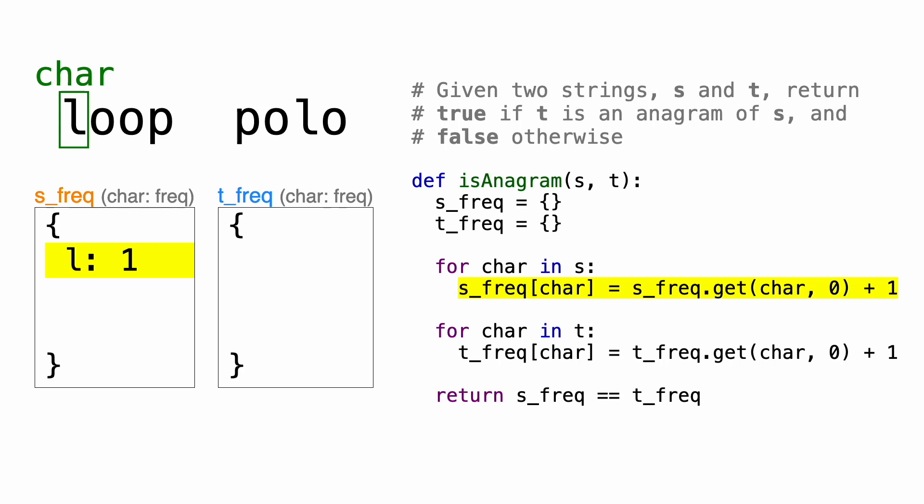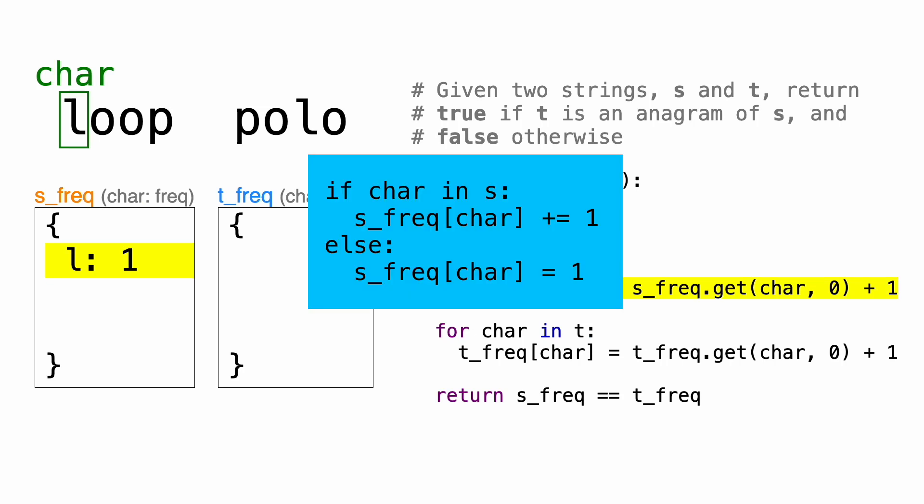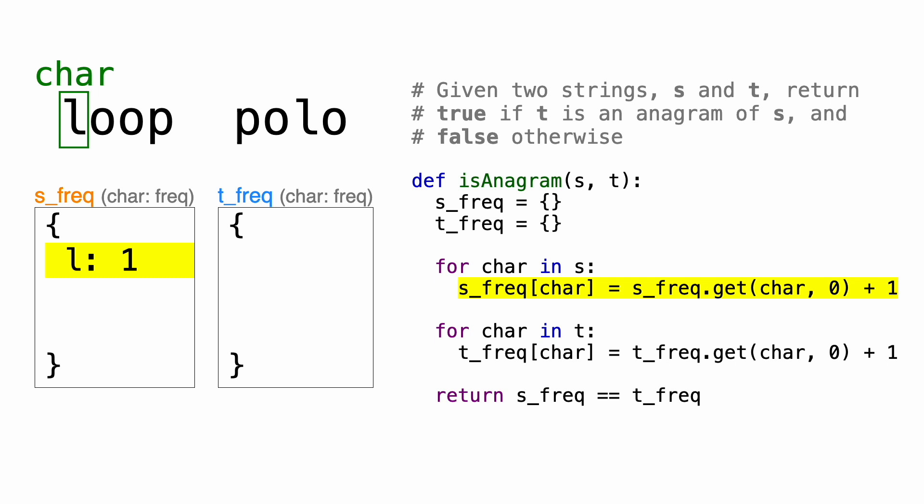Now you can also write this using if-else logic like this. If the key exists in a dictionary, then increment it, else initialize its value to one. This works, but I chose this way because I think using the get method looks a lot cleaner.